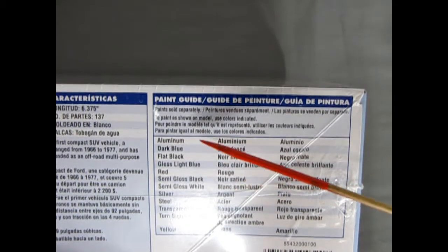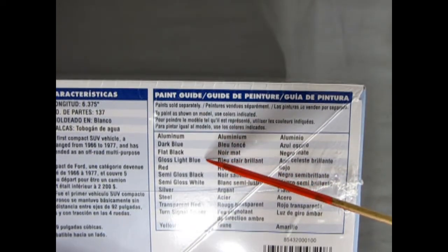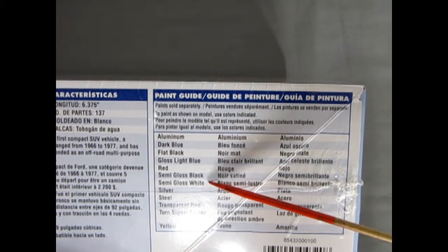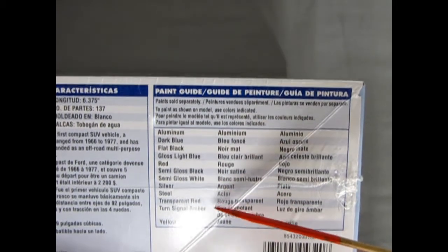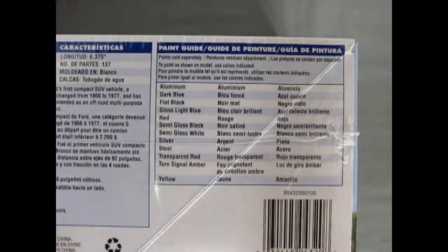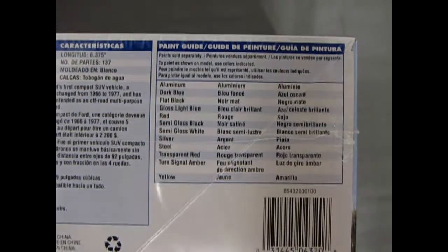Here's all our paints we'll need. Aluminum, dark blue, flat black, gloss light blue, red, semi-gloss black, semi-gloss white, silver steel, transparent red and turn signal amber. So get ready to go get some paints out there.